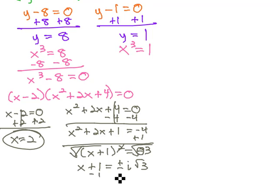Finally, subtract 1 from both sides to get our next two answers as x is equal to negative 1, plus or minus i, square root of 3.